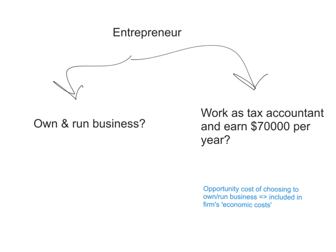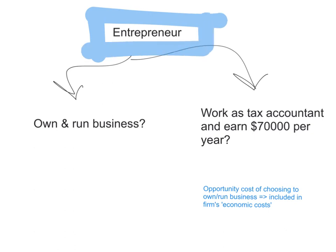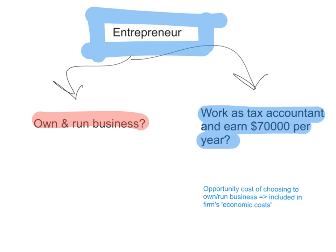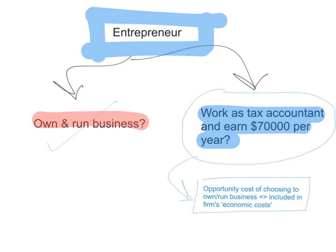Another example of an implicit cost: say there is a young entrepreneur who decided to set up her own business. She had a choice between owning and running her own business or working as a tax accountant, which would have earned her $70,000 per year. By choosing to own and run her own business, she has given up that $70,000 per year. This is the opportunity cost of that choice, and therefore it is included in the firm's economic costs.